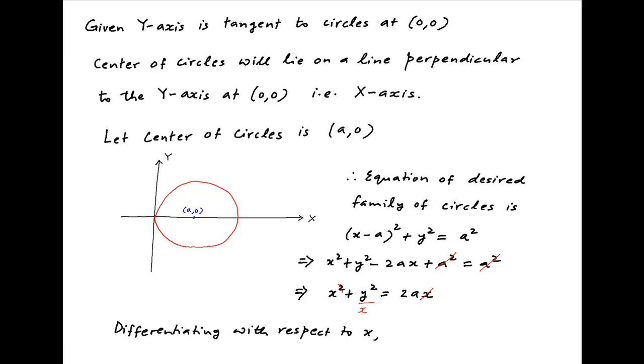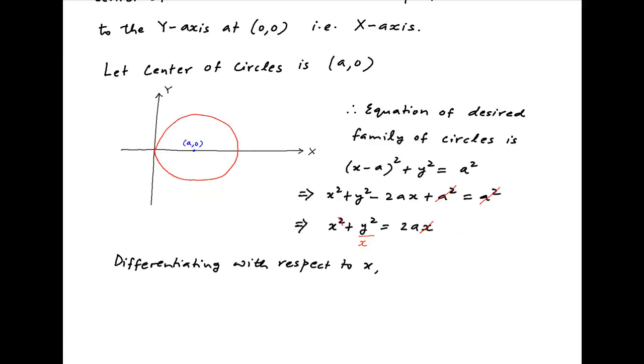Now, we differentiate the above equation with respect to x. We get 1 + [x times the derivative of y², which is 2yy', minus y² times the derivative of x, which is 1] divided by x², equals 0.